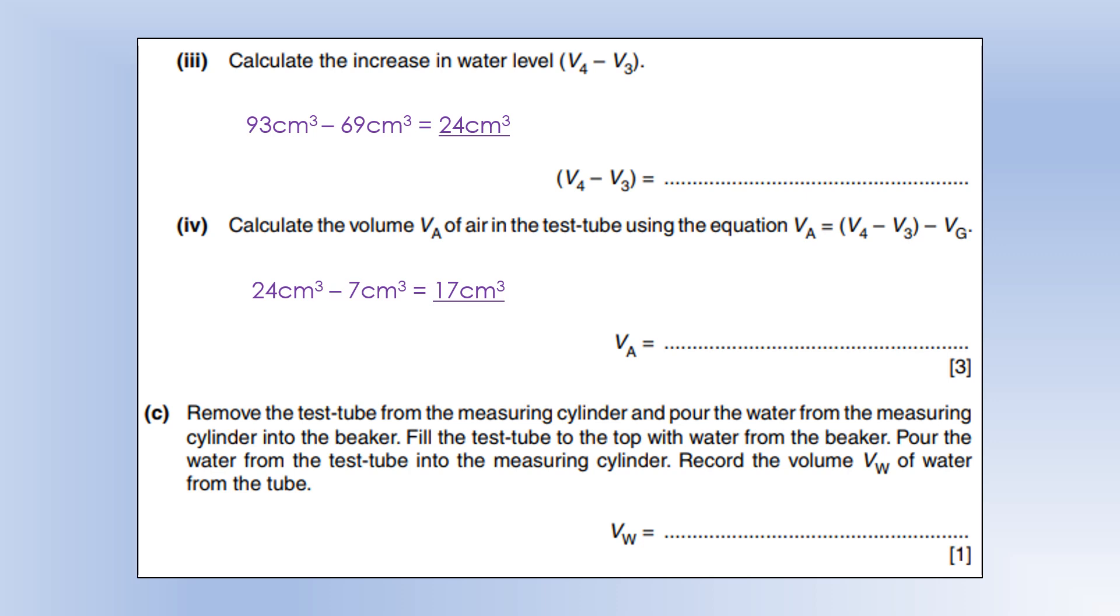Another way we could have measured the volume is to fill the test tube and then pour it into the measuring cylinder. I actually put the test tube inside the measuring cylinder before I poured it to make sure all of the water that left the test tube went into the measuring cylinder so we're not spilling any. Then I got a volume of 16, so you can see that's pretty close to the 17 we've calculated already.